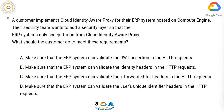A. Make sure that the ERP system can validate the JWT assertion in the HTTP requests. B. Make sure that the ERP system can validate the identity headers in the HTTP requests. C. Make sure that the ERP system can validate the X-Forwarded-For headers in the HTTP requests. D. Make sure that the ERP system can validate the user's unique identifier headers in the HTTP requests.